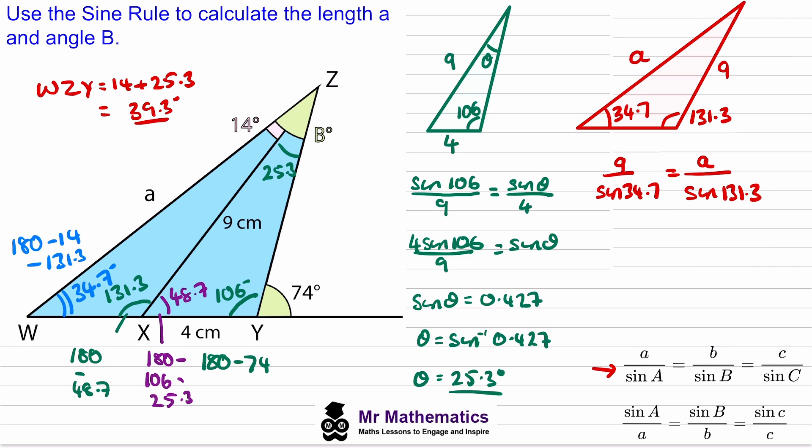And to work out this A we'll move this division to the left hand side so it becomes 9 multiplied by the sine of 131.3 over the sine of 34.7.